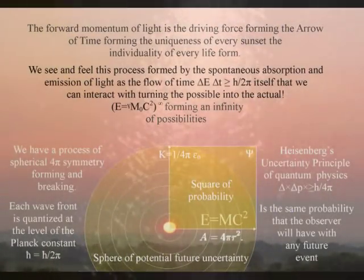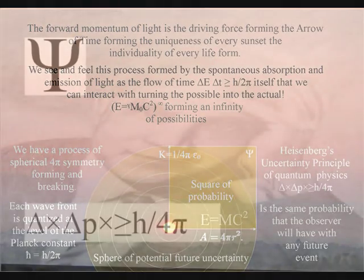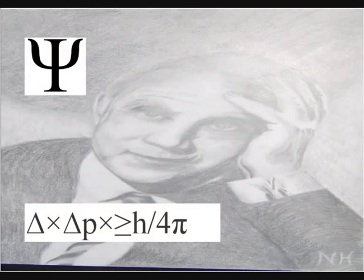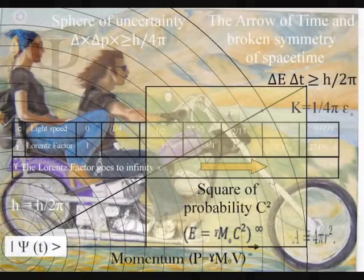This is explained mathematically by the quantum wave particle function, or probability function of quantum mechanics. This probability function forms Heisenberg's uncertainty principle, representing the same uncertainty we have with any future event.